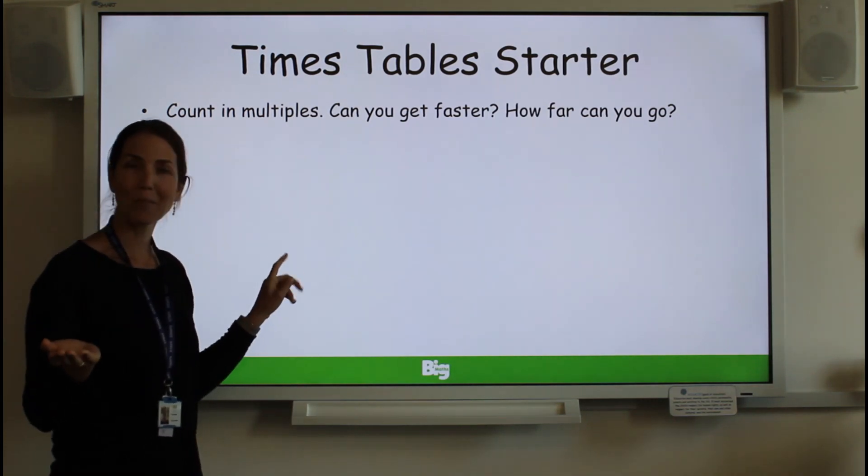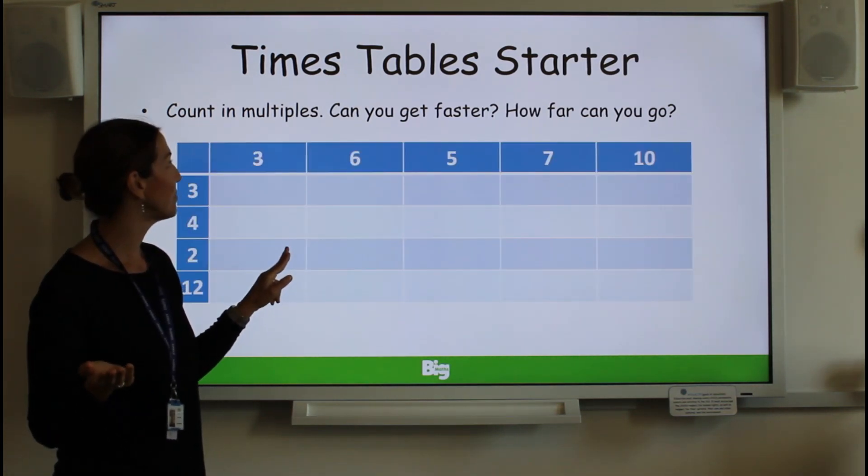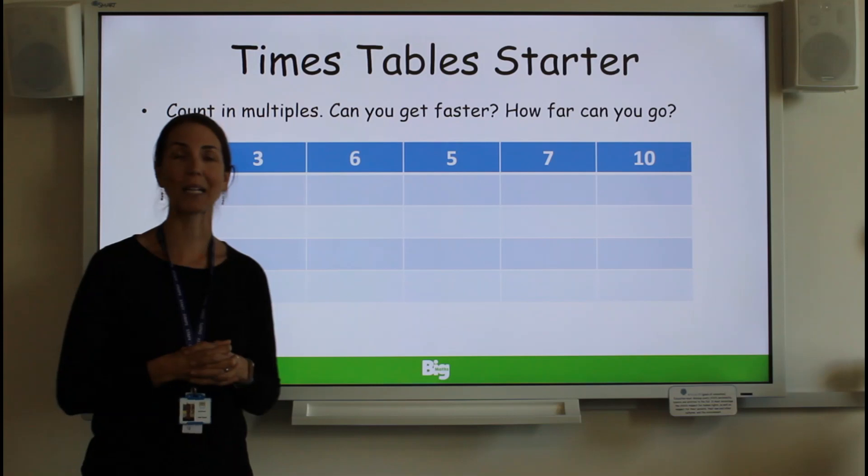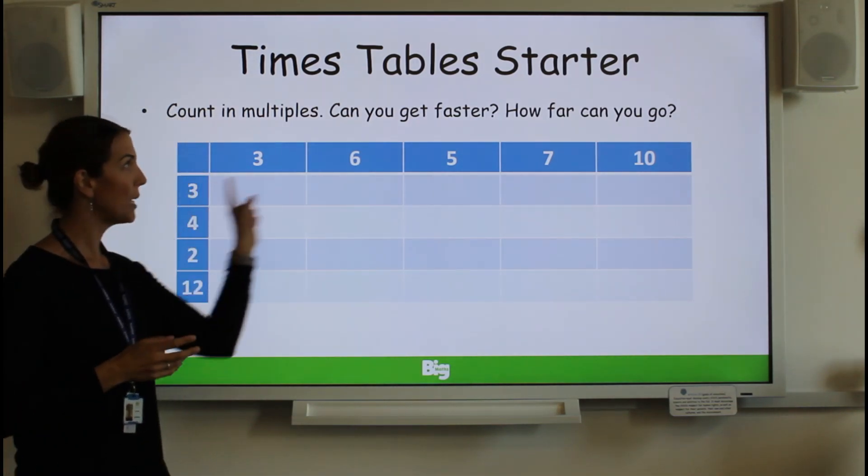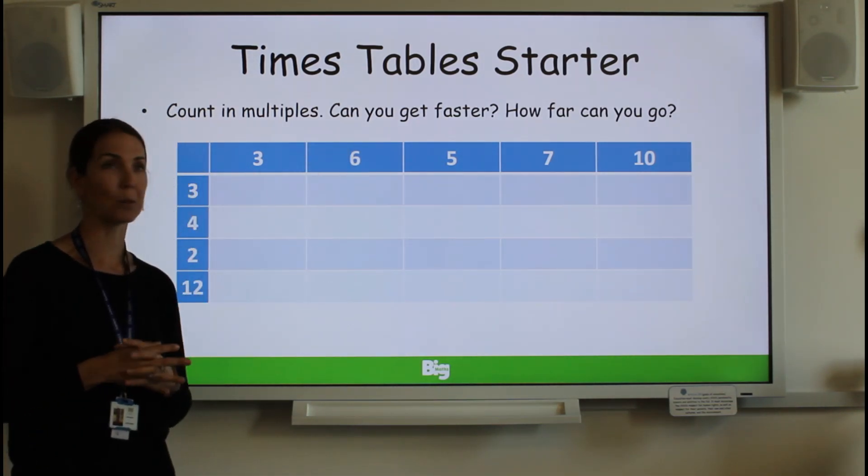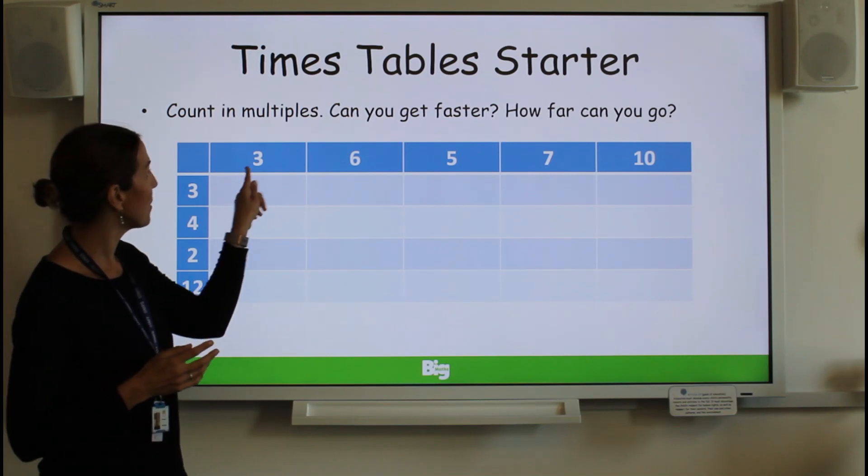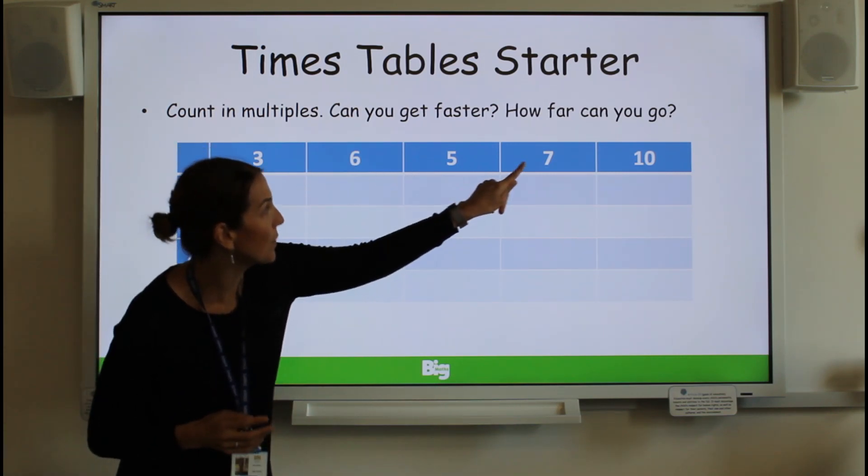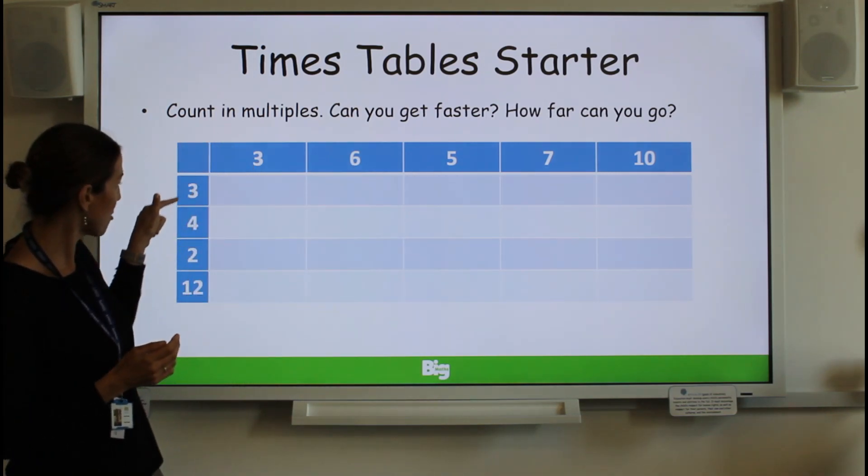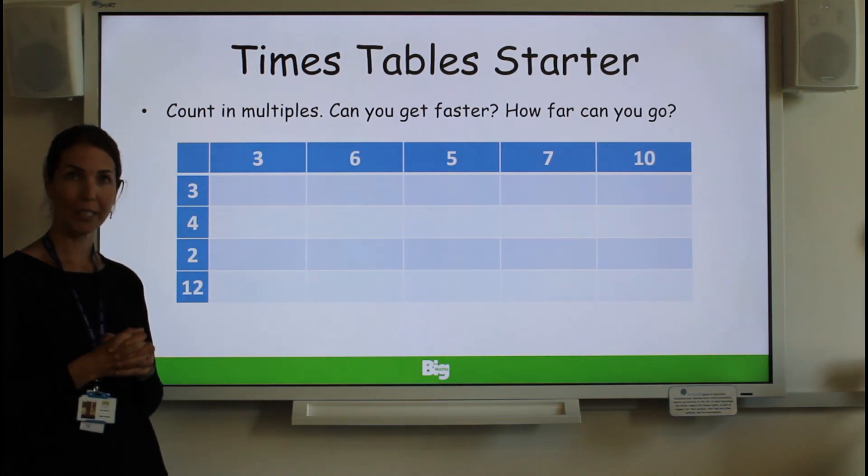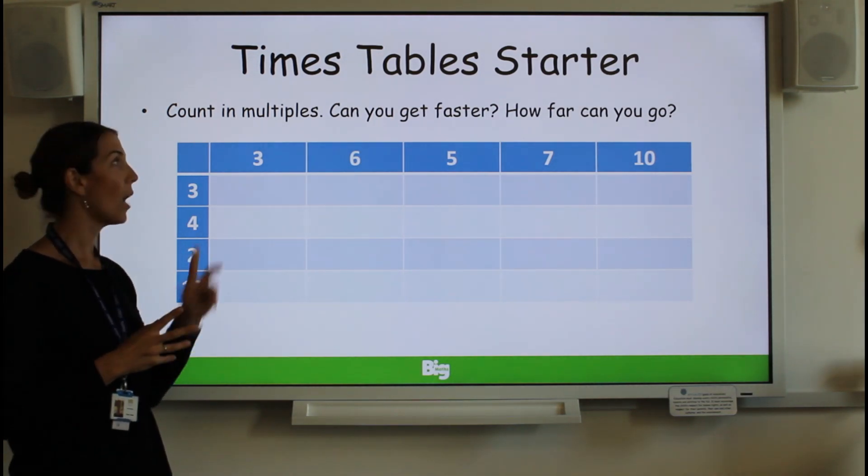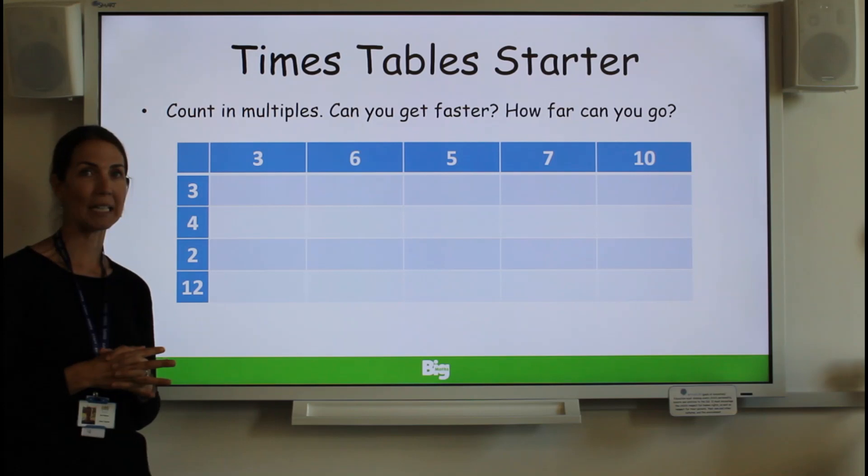Now why do we need to count in multiples of 4? You're probably wondering. They're really important when it comes to times tables. So here we have our times tables grid. We have the 3, the 6's, the 5, the 7's and the 10. And then down here 3, 4, 2 and 12.